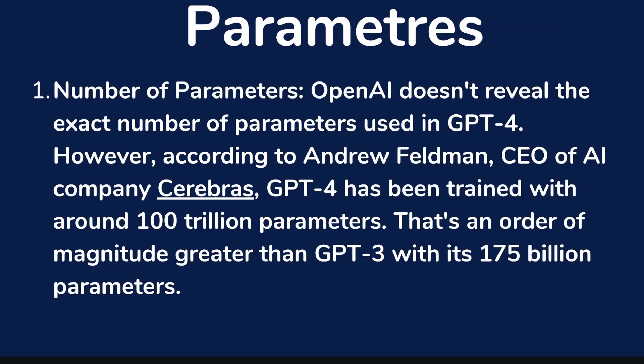Now let's talk about parameters. Parameters essentially means the type or amount of data that each large language model — such as GPT-4 or GPT-3.5 — was trained on. OpenAI doesn't give exact numbers for GPT-4, but from using the model you can tell it's been trained on far more parameters. There are numbers floating around that GPT-3 was trained on 175 billion parameters while GPT-4 was trained on about 100 trillion parameters.